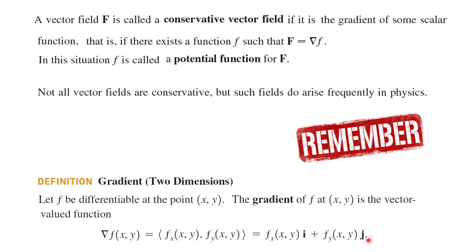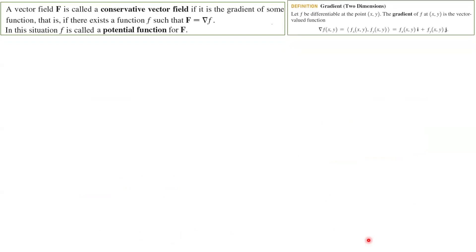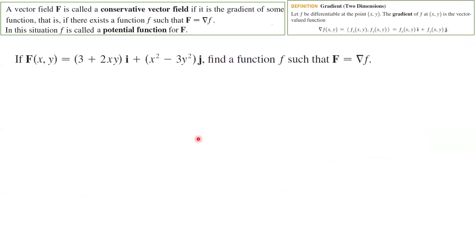So far we've checked whether a vector field is conservative or not. Now our goal is to find the potential function. We have a vector field given as (3 + 2xy) in the direction of the x-axis plus (x² − 2y²) in the direction of the y-axis, and our goal is to find its potential function.